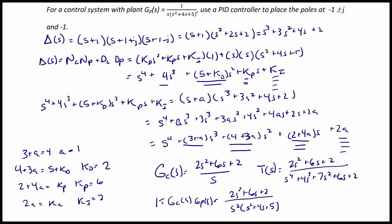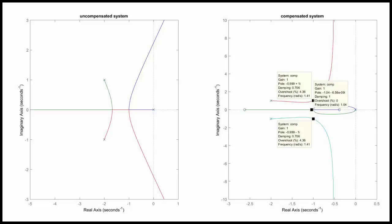So now let's take a look at the root locus and the step response. Okay, here's the root locus for the uncompensated and the compensated system. So the first thing you should notice is that the shape and behavior changes because we went from a type 1 to a type 2 system.